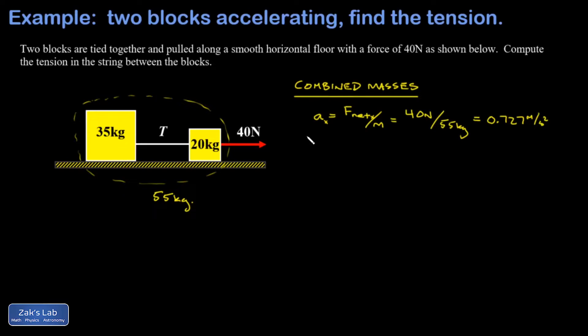Then I focus in on just the 35 kilogram mass. I know the acceleration of this guy now—the acceleration is 0.727 meters per second squared. So I apply Newton's second law to that 35 kilogram mass.